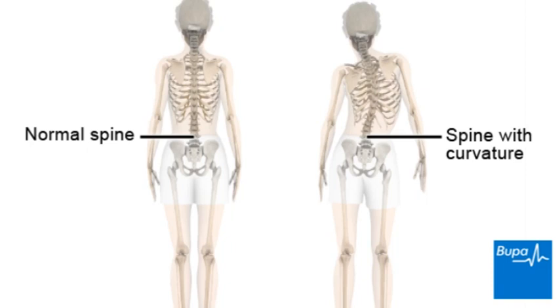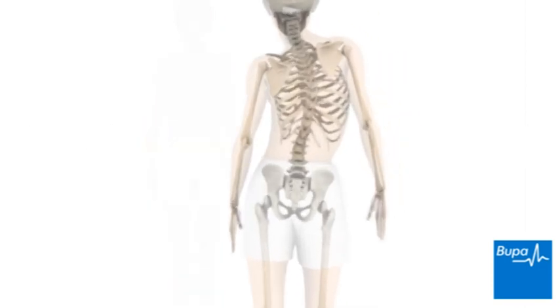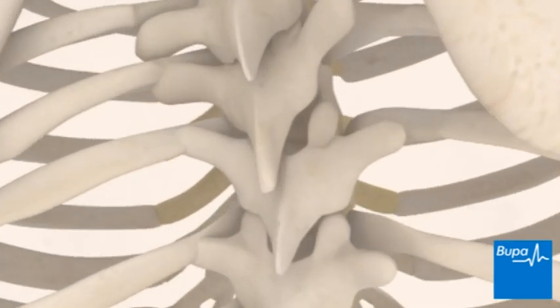The curvature is often shaped like the letter S or C, and the spine may also be twisted. In scoliosis, the vertebrae twist and curve.